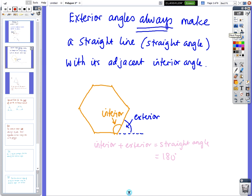OK, so exterior angles always make a straight line with its adjacent, adjacent means it's next to, next to it. So here's an interior angle and the exterior angle is just adjacent to it, and they always make a straight line. And what you have to remember is, just like triangles are 180, so are straight lines. So straight lines are 180, so the interior plus the exterior equals 180. OK, so just copy that and come across.